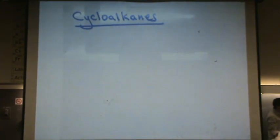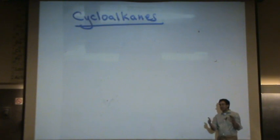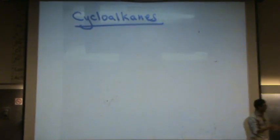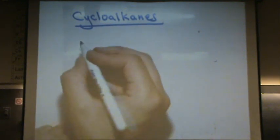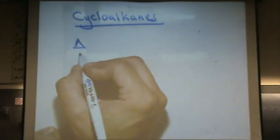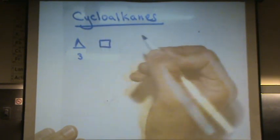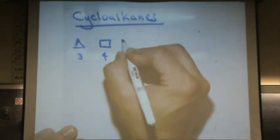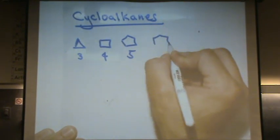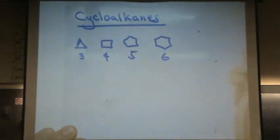Cycloalkanes are a type of alkanes that are formed into ring structures. Your typical alkane is acyclic, meaning it's a chain, but this would be a ring. For example, you're going to have something that looks like a triangle - three carbons, four carbons, five carbons, six carbons, etc.